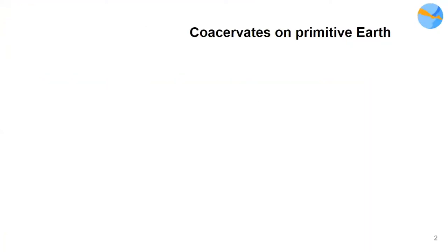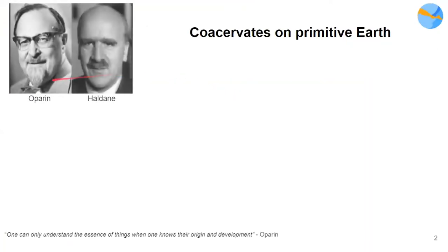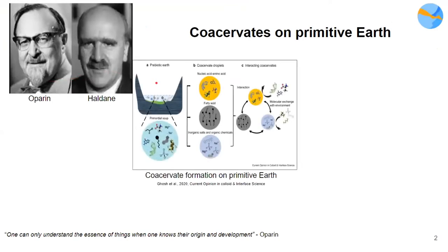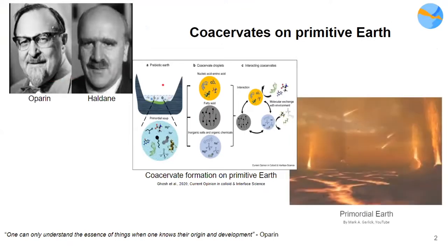You might be aware of the Oparin-Haldane hypothesis, which states that coacervates — droplets encapsulating life-relevant molecules — arose in a warm little pond or a primordial soup of sorts, and these droplets evolved into all life on earth as we know it.